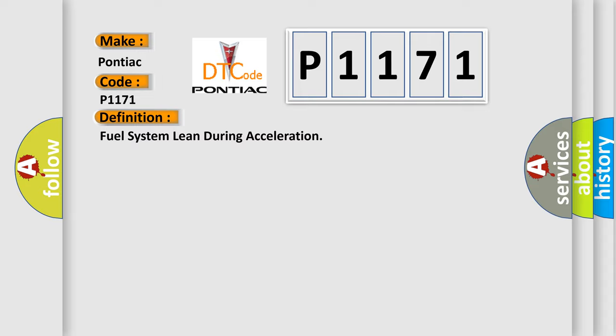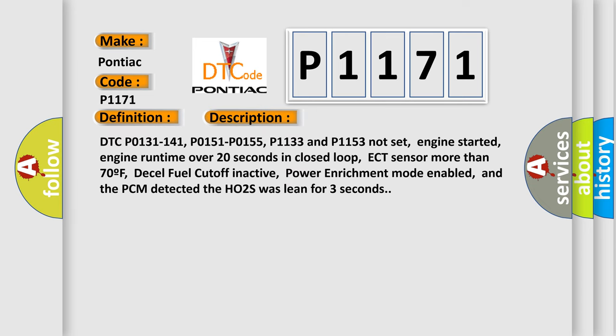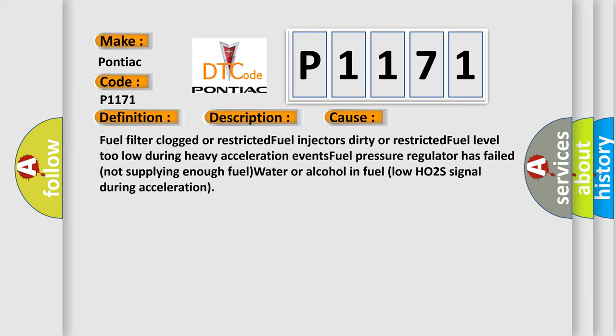And now this is a short description of this DTC code. DTC P0131, P0141, P0151, P0155, P1133, and P1153 not set; engine started; engine runtime over 20 seconds in closed loop; ECT sensor more than 70°F; diesel fuel cutoff inactive; power enrichment mode enabled; and the PCM detected the HO2S was lean for 3 seconds. This diagnostic error occurs most often in these cases: fuel filter clogged or restricted, fuel injectors dirty or restricted, fuel level too low during heavy acceleration events, fuel pressure regulator has failed not supplying enough fuel, water or alcohol in fuel, or low HO2S signal during acceleration.